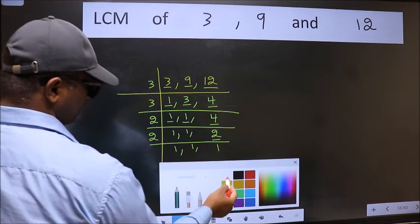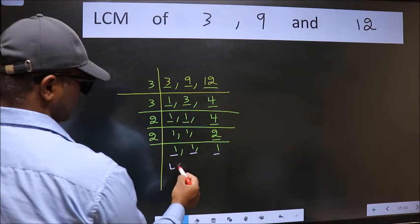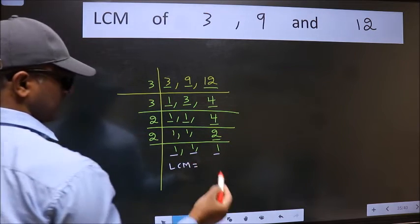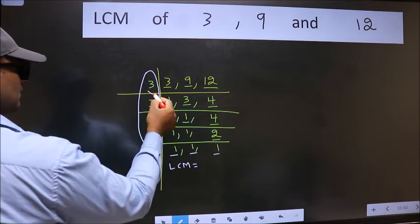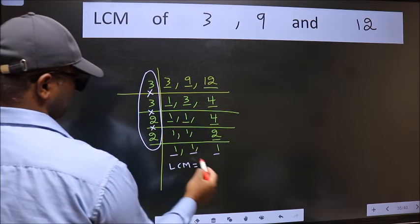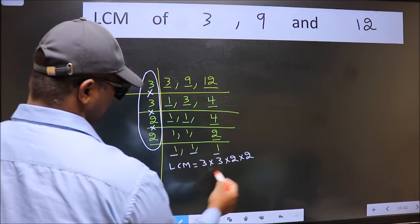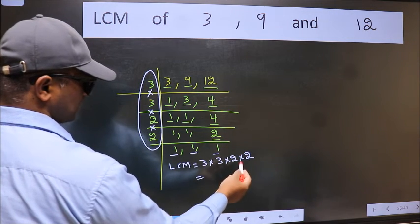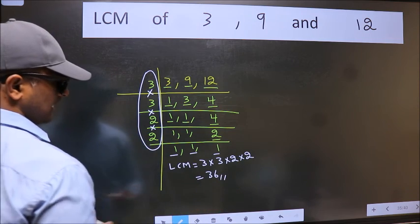So we got 1 in all the 3 places. So our LCM is the product of these numbers. That is 3 into 3 into 2 into 2. When we multiply these numbers we get 36 is our LCM.